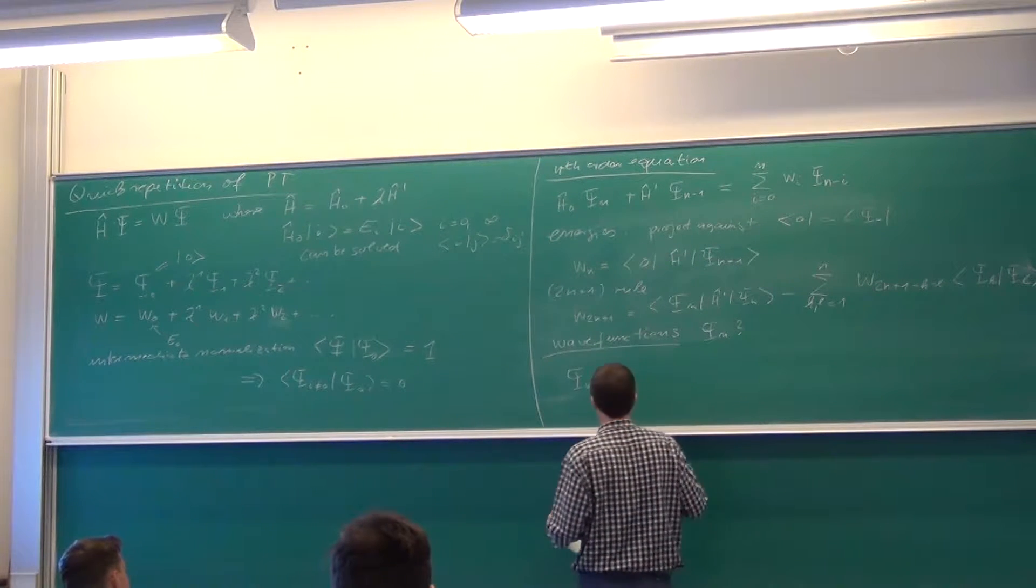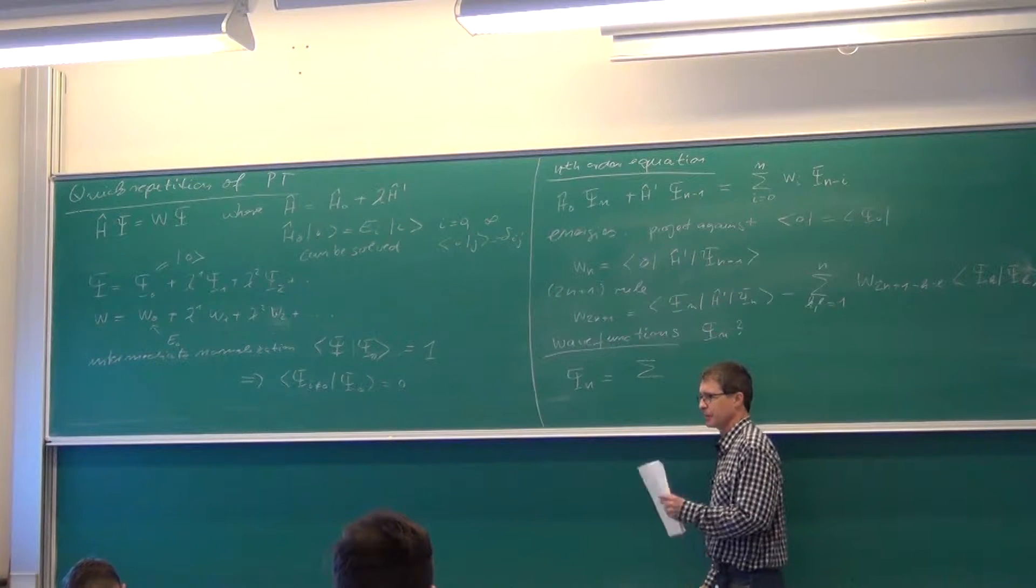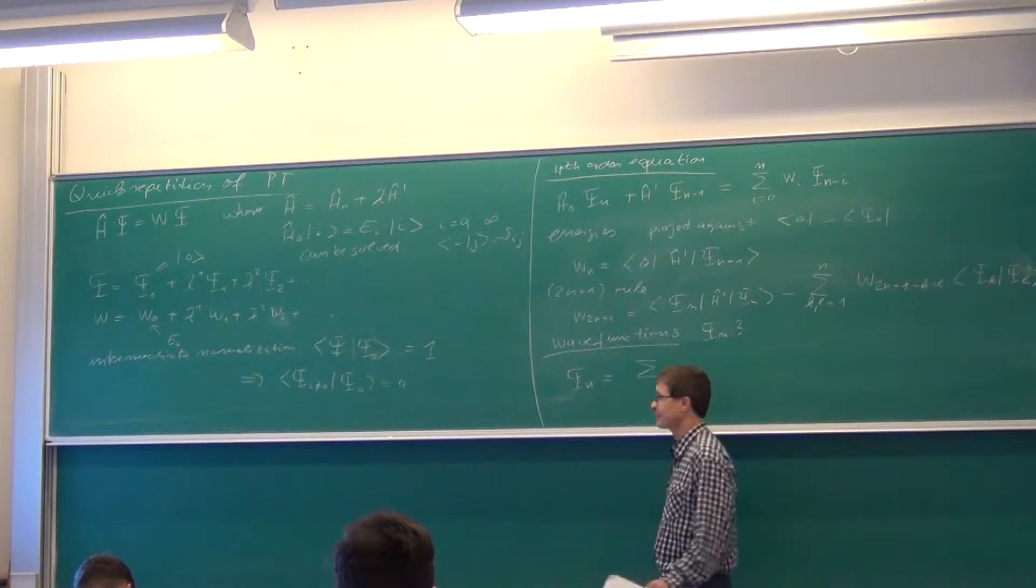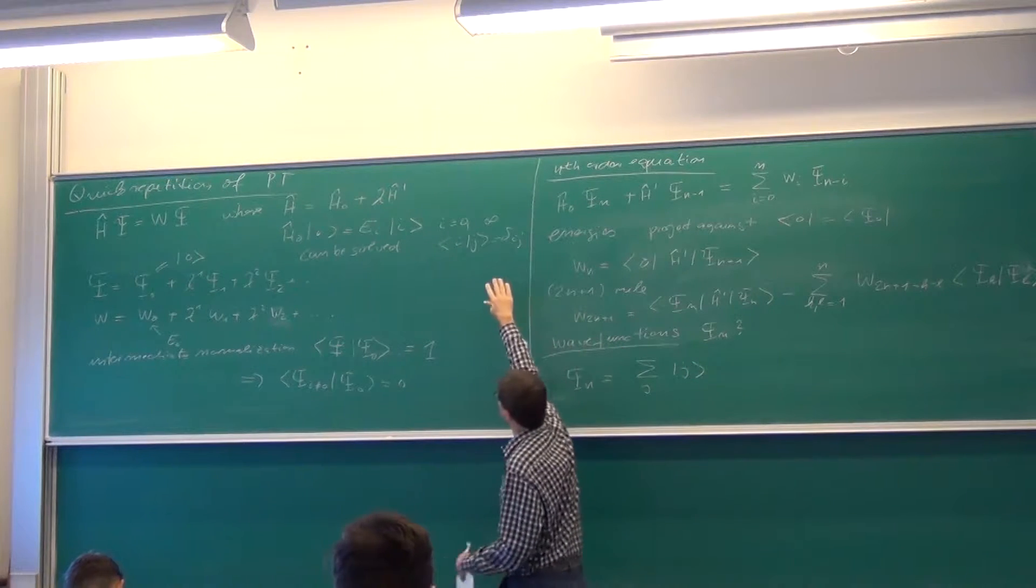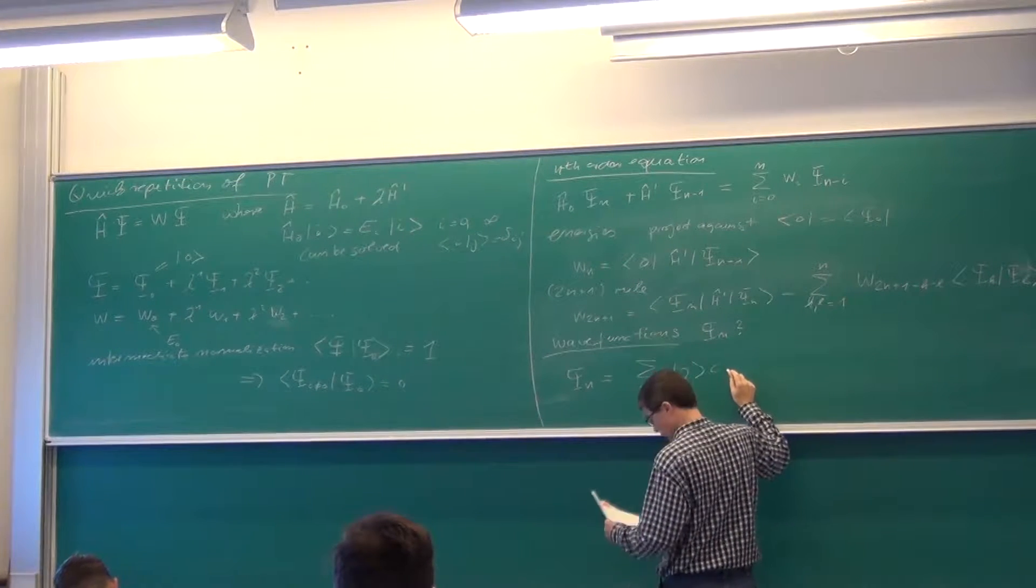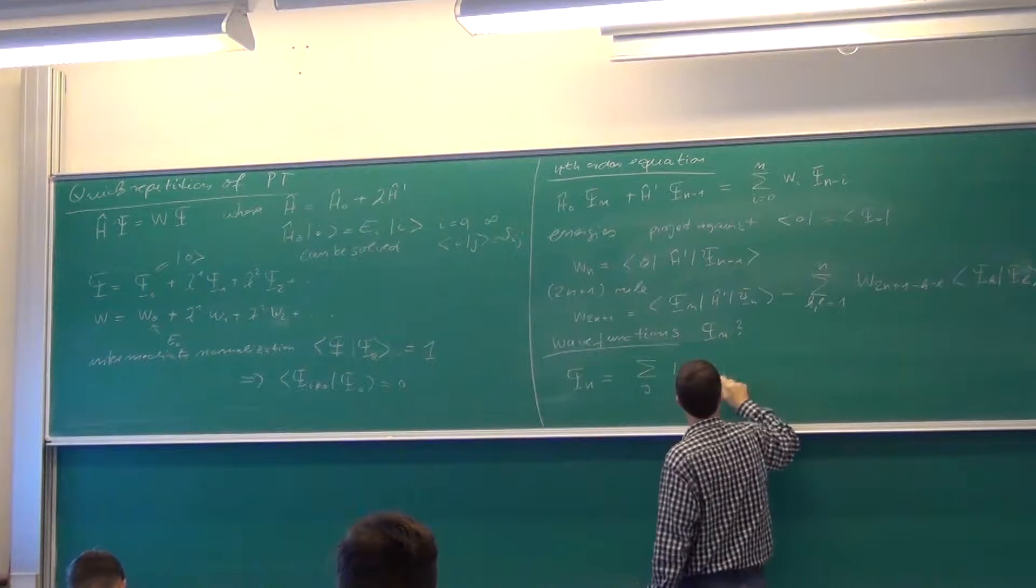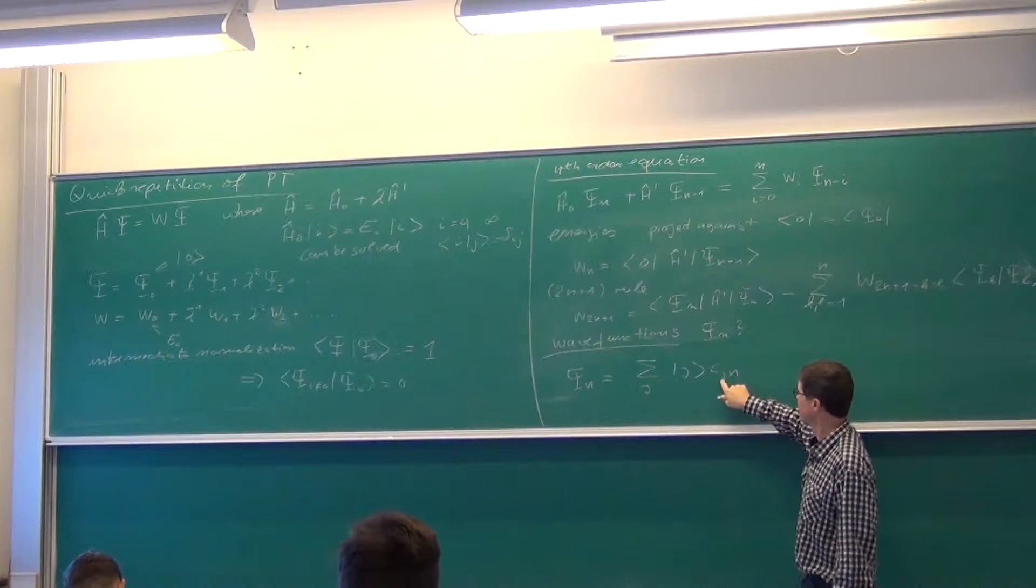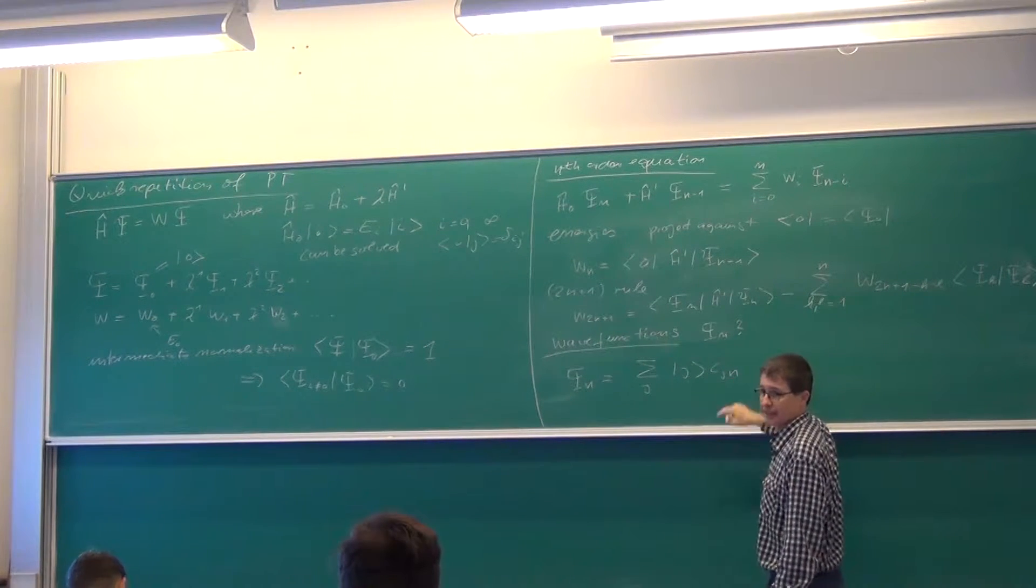We expand wave functions in a complete set and you will later on, when you come to degenerate perturbation theory, see that we actually, from degenerate perturbation theory, we use exactly the same set of functions which we had last week. So, we use this complete set of functions, expand them and then we get some coefficients, which are called cj.